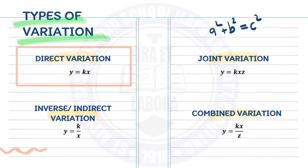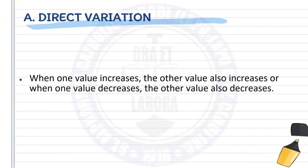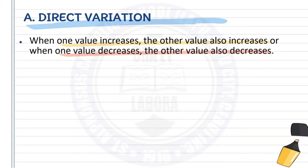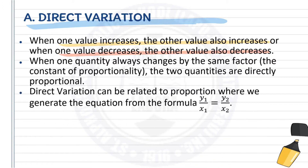Let's start first with direct variation. Direct variation is defined when one value increases, the other value also increases. Or, when one value decreases, the other value also decreases. In short, when one quantity always changes by the same factor — that is, the constant of proportionality — the two quantities are directly proportional.